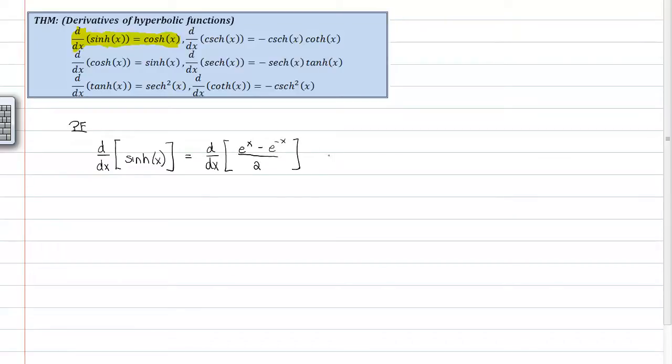And we know from laws of derivatives, from derivative properties, that this can be broken into the derivative with respect to x of e to the x minus the derivative with respect to x of e to the negative x over 2.